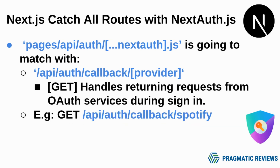The handler that we define in that file is also going to match with /api/auth/callback/provider. If we perform a GET HTTP request to that endpoint, it's going to handle the returning requests from auth services during the sign-in. One example is a GET HTTP request performed over /api/auth/callback/spotify, which is typically executed as part of the sign-in flow after the user is logged in to that platform — so after we sign in to Spotify, Spotify performs a request to our callback using this endpoint.